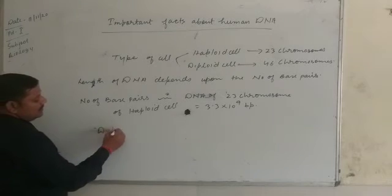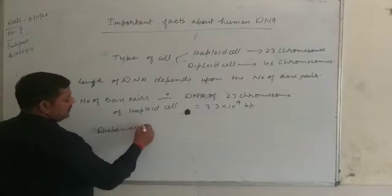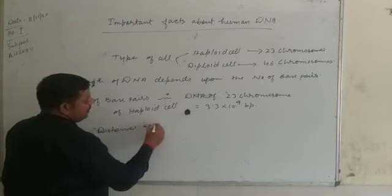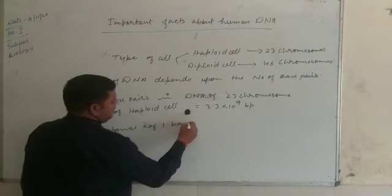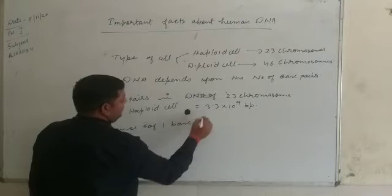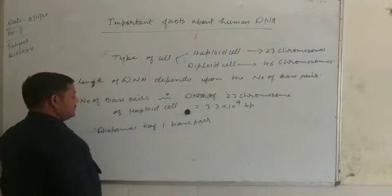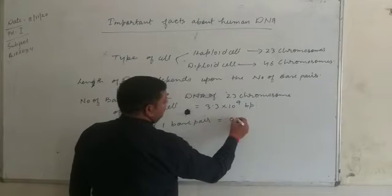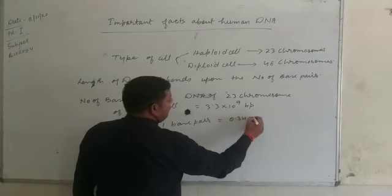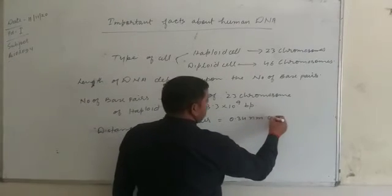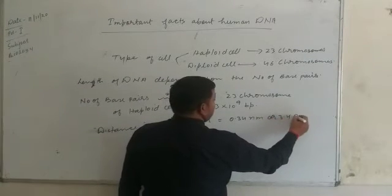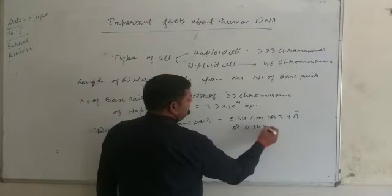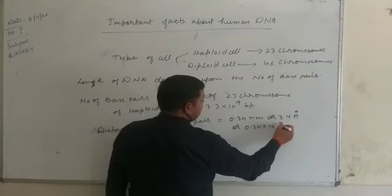The distance between one base pair: one base pair is 0.34 nanometers, or 3.4 angstroms, or 0.34 × 10 to the power minus 9 meters.